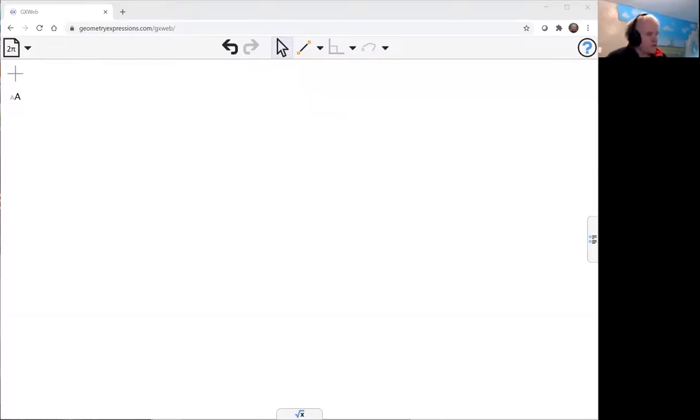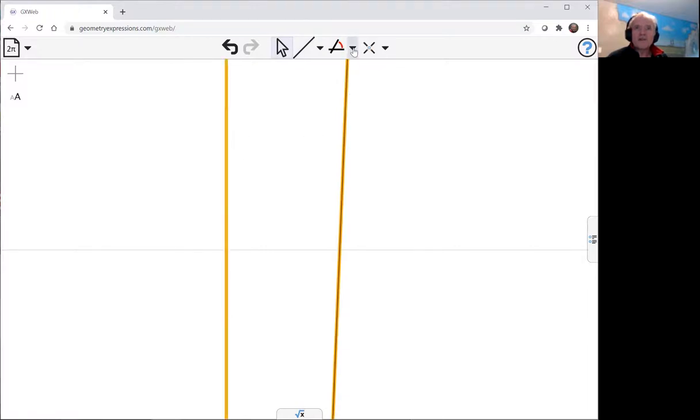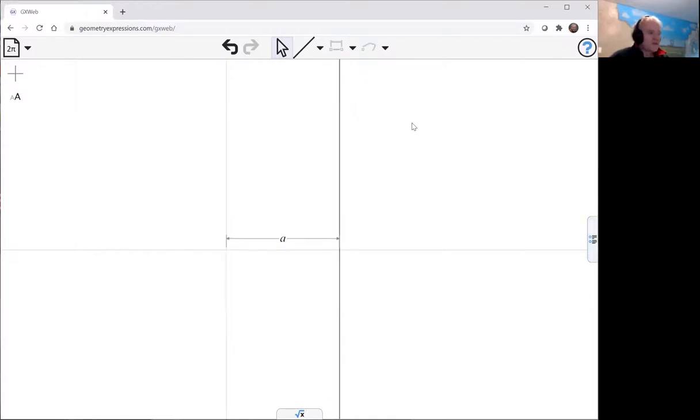We're going to have our axis as usual, and it seems to be a common theme in some of these mechanisms. We're going to have a line which is parallel to the y-axis and we want to specify its distance. We use a parallel distance constraint and make that distance a.